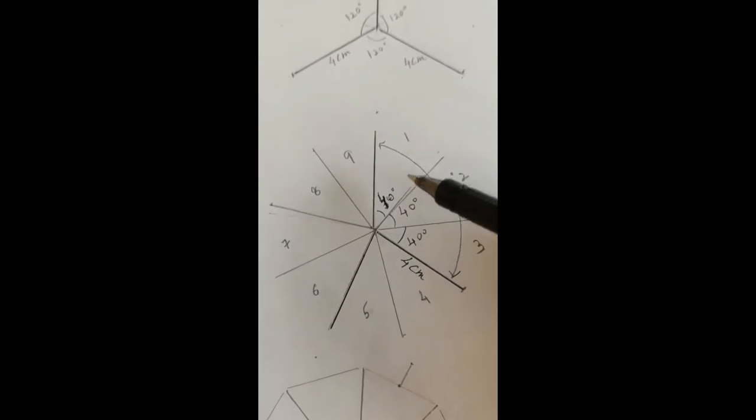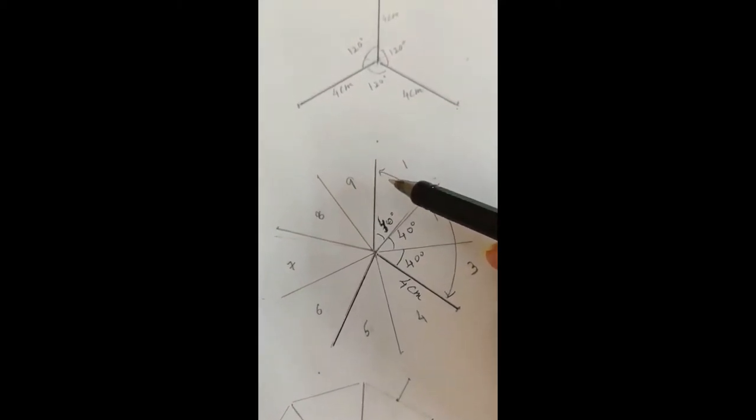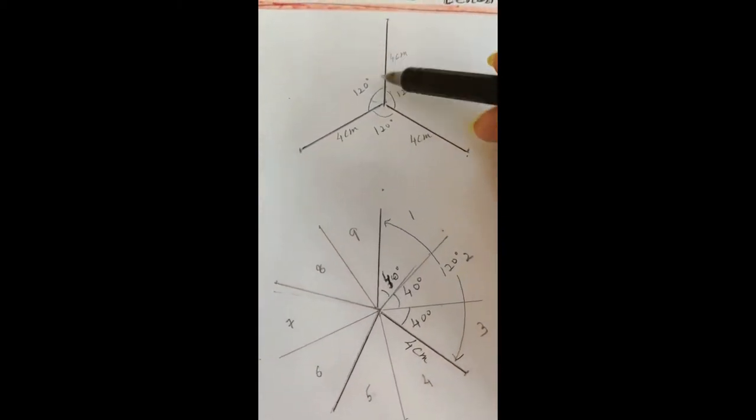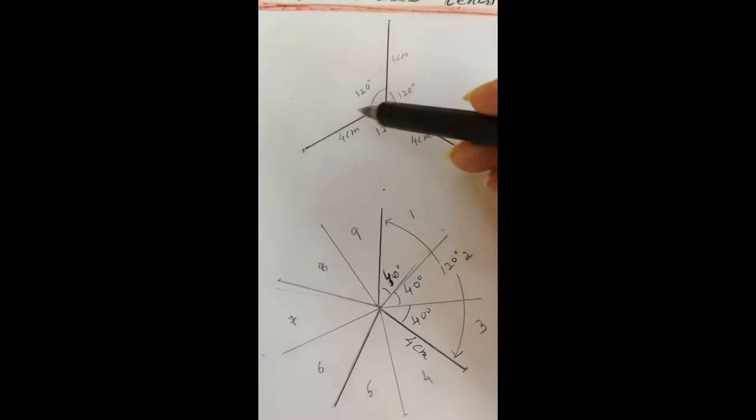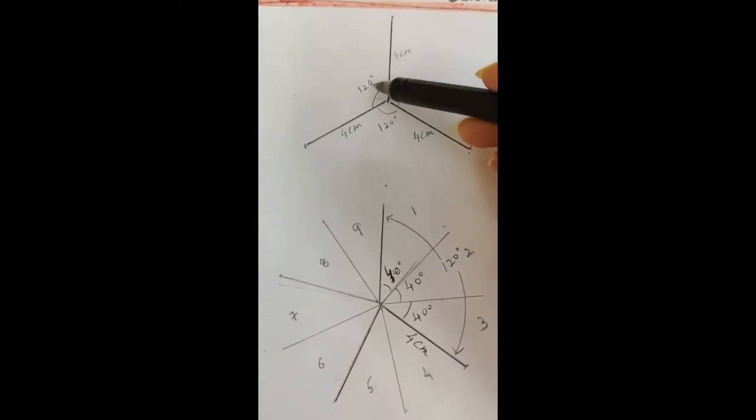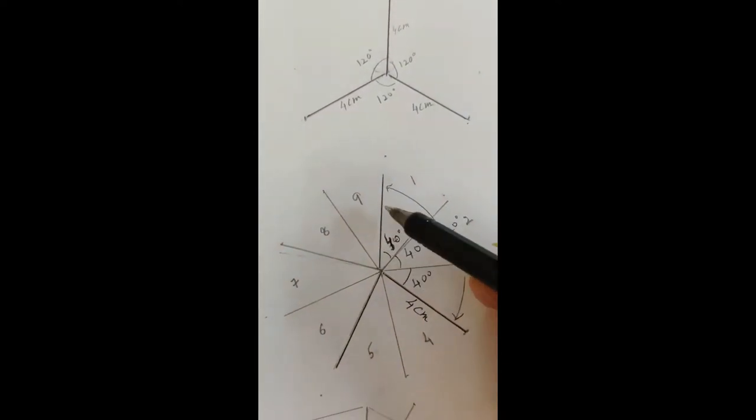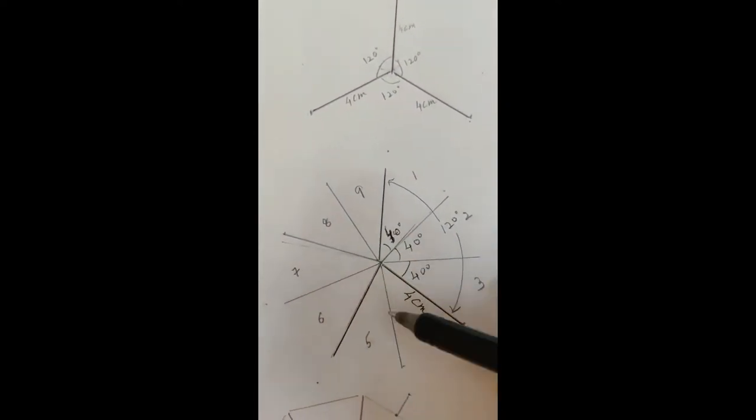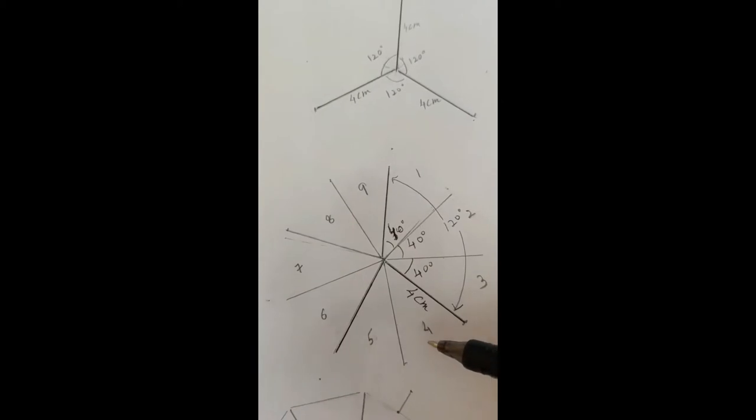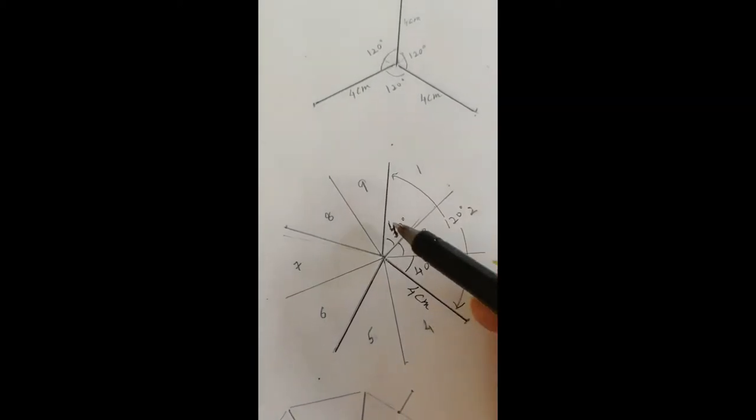Once again we will need either a circle or we can start making the lines, 4 centimeter each with 120 degree angle between them. So either you start with these radii of 4 centimeter each with a distance of, with an intervening angle of 40 degree.